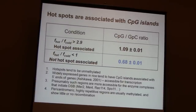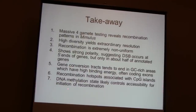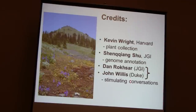To summarize: I've shown a massive amount of data revealing a very high-resolution recombination map in Mimulus. It's extremely non-uniform, shows strong polarity at least in about half of annotated genes, gene conversion is correlated with methylation state, and gene conversion tracts have a tendency to get stuck in GC-rich areas. I want to thank Kevin for picking the plants, Xu for annotating the genome, and Dan and John for never-ending stimulating conversations. Thank you.